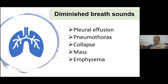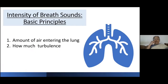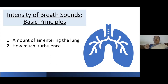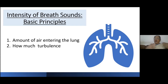Now let's go on to the intensity of breath sounds. Intensity of breath sounds is diminished in pleural effusion, pneumothorax, collapse, mass, and emphysema. What does the intensity of breath sounds depend upon? It depends upon the amount of air entering the lung. If you have a lot of air entering the lung you will hear a good breath sound — and how much turbulence. Suppose somebody is not getting enough air into the lung — for example, a patient with emphysema. Their tidal volume is less because they're not taking in much air. That person is likely to have diminished intensity of breath sounds because the amount of breath entering is less. Quiet breathing is inaudible; if you go to a good breath you get turbulence and intensity of breath sounds will increase.